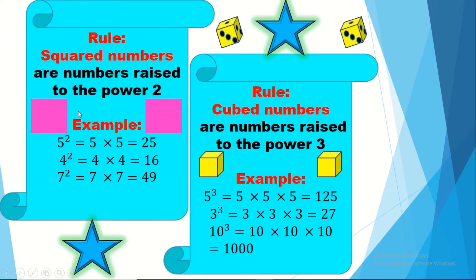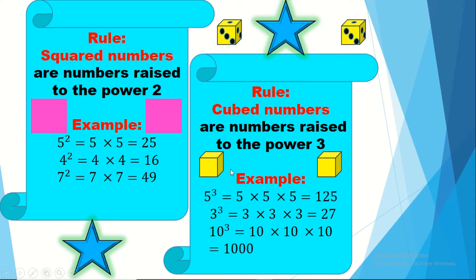Squared numbers are numbers raised to the power 2. For example, 5 squared is 5 × 5 = 25, 4 squared is 16, 7 squared is 49. An important example: the area of a square is side × side = side squared. Cube numbers are raised to the power 3. For example, 5 cubed is 5 × 5 × 5 = 125, 3 cubed is 27, 10 cubed is 1000. The volume of a cube is a × a × a = a to the power 3.